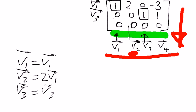And finally, we have that v4 is equal to minus 3v1 plus v3. And there we go, we've decomposed all the vectors with respect to the basis.